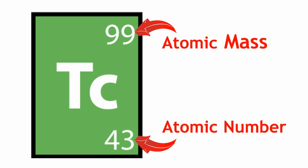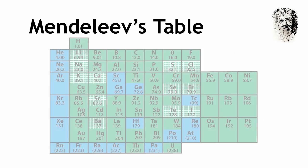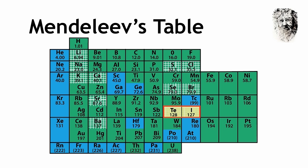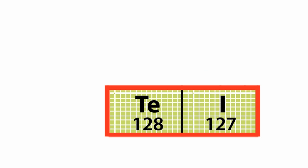Arranging the elements in order of their atomic number solves some of the problems associated with Mendeleev's table. For example, in Mendeleev's table, iodine, which has a mass of 127, should be put before tellurium, which has a mass of 128.